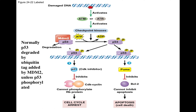You need four good copies of P53 to make a functional tetramer. If only one of those four P53 subunits has a mutation in it, it can disrupt the function of all the others, so you can't make a functional version of P53.